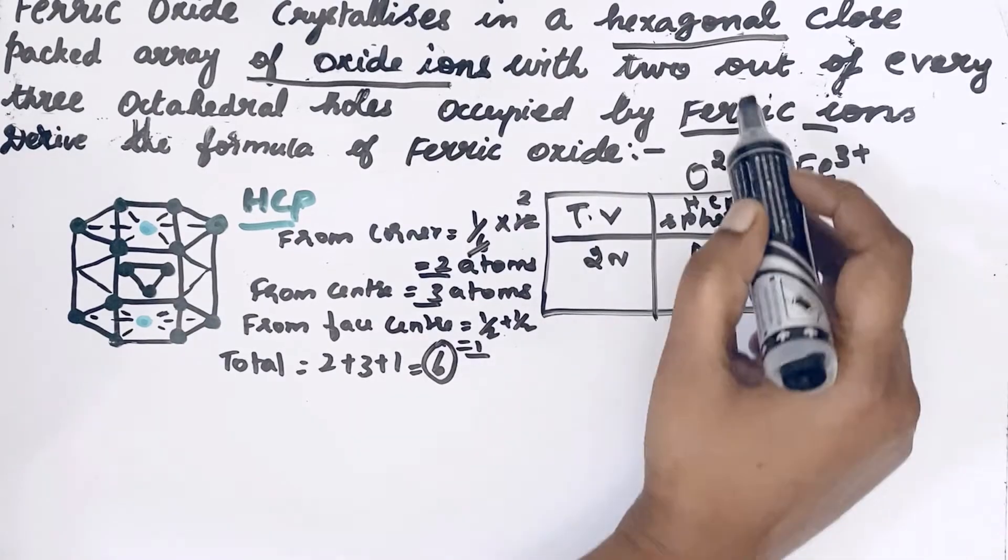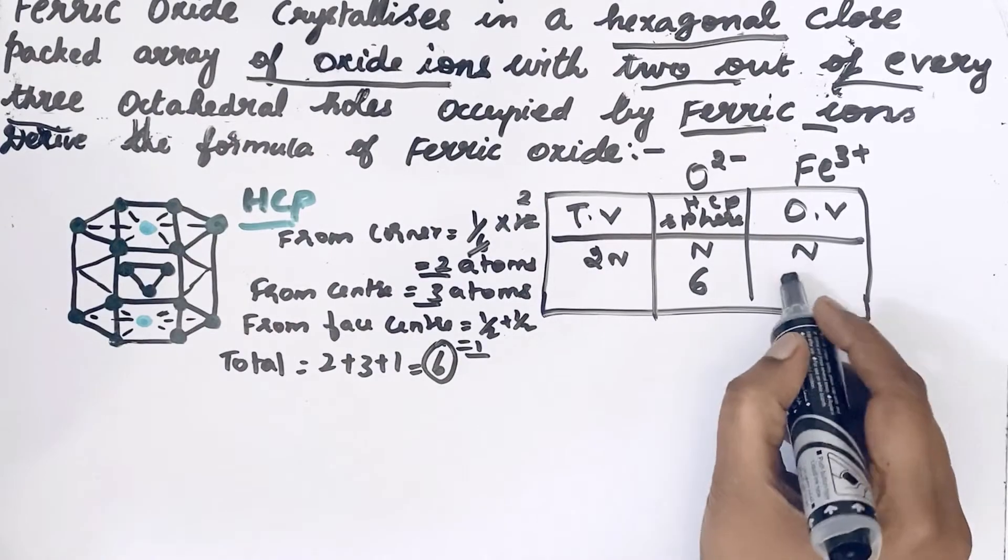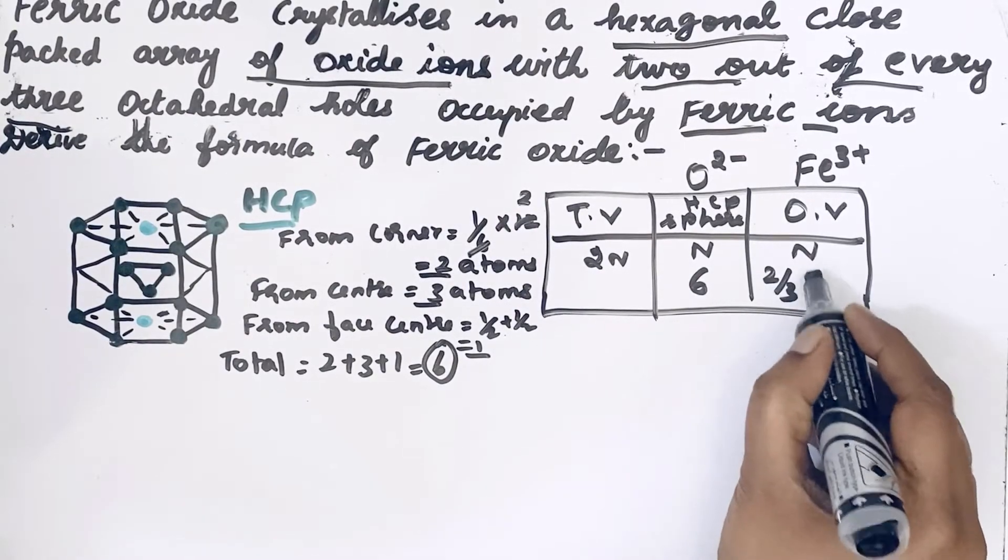In the question it is given 2 out of every 3 octahedral holes, so here: 2/3 × 6.